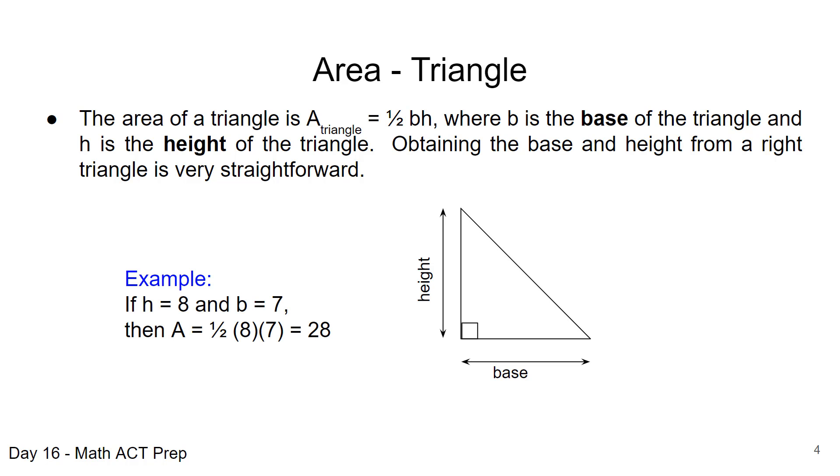So let's say the height is 8 and the base is 7, so we're going to apply our formula. An area is 1 half, 8 times 7, which gives us an area for this triangle of 28.